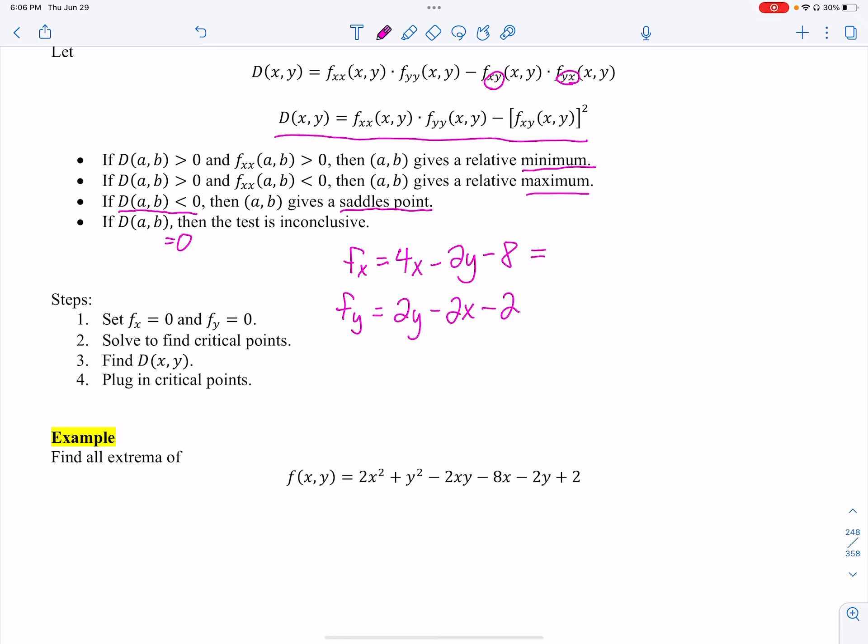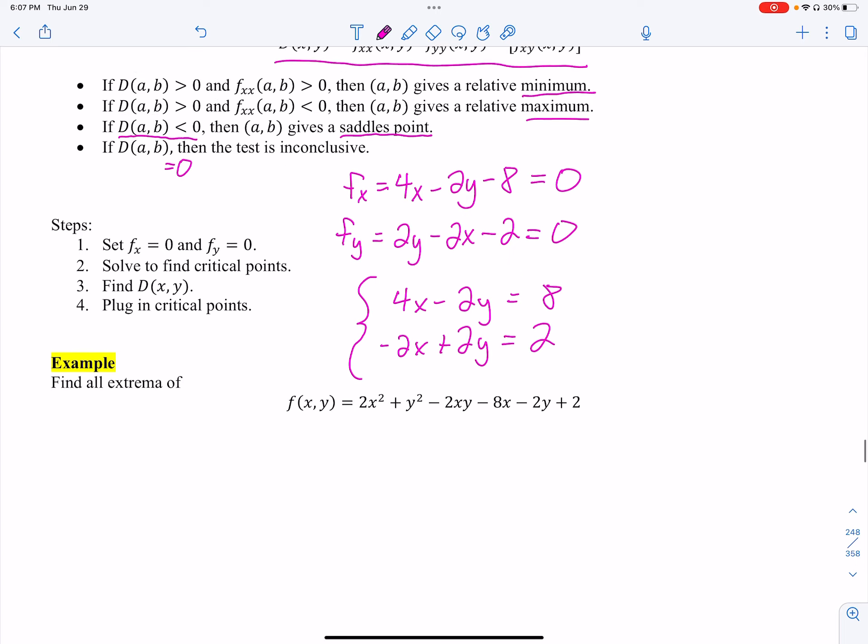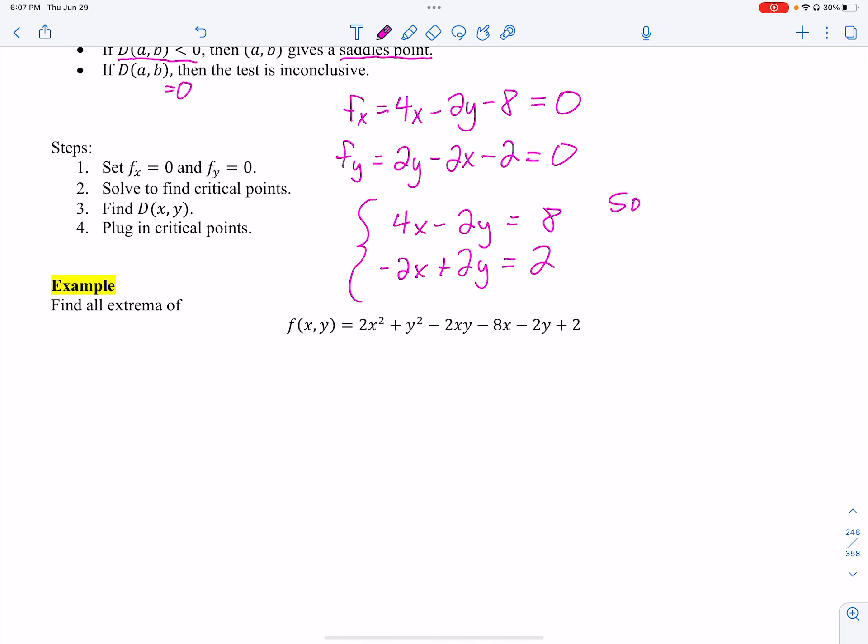And we're going to set those equal to zero. And we have a system now. So the system I'm going to solve, 4x minus 2y equals 8. And then the other one, I'm going to flip it over. Let's actually keep our x positive here. So I'm going to add that over. I got 2x minus 2y equals 2. Actually, we should have kept it where it was at. Minus 2x plus 2y, and then add 2 over.